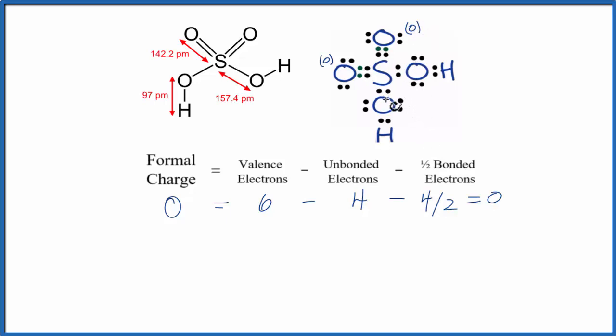Next, let's do the sulfur in the middle of the structure. Sulfur is in group 16, and it has six valence electrons. Unbonded valence electrons. All of the electrons for sulfur are between sulfurs and oxygens, so there are zero unbonded.